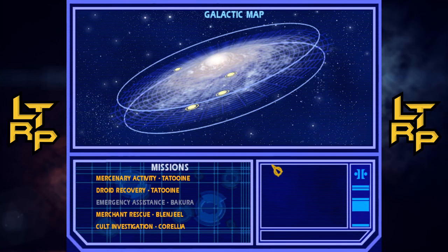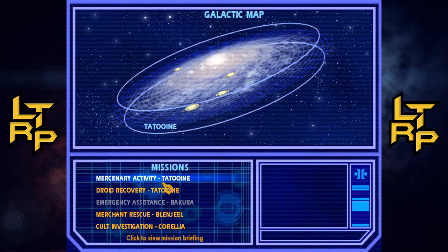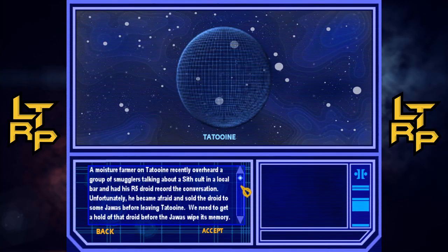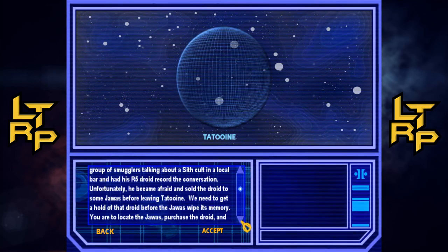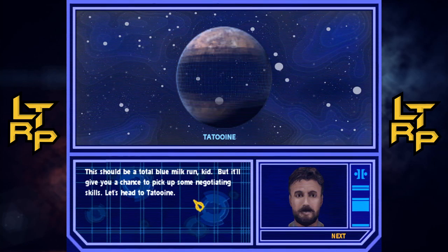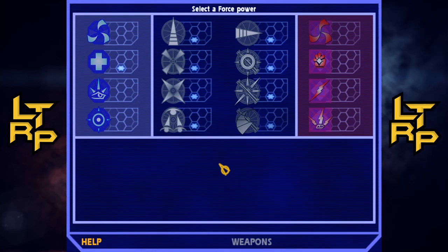I think we're going to leave it there for today. We've done our character creation, our starting missions and our first proper in-game mission from the choice — so that's really good. We'll choose our next mission so I can save: droid recovery sounds fun. A moisture farmer on Tatooine recently overheard a group of smugglers talking about a Sith cult in a local bar, and had his R5 droid record the conversation. Unfortunately he became afraid and sold the droid to some Jawas before leaving Tatooine. We need to get a hold of that droid before the Jawas wipe its memory.